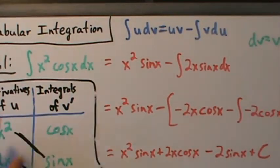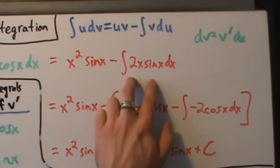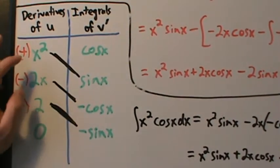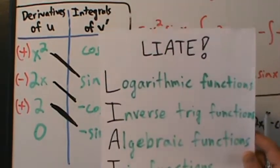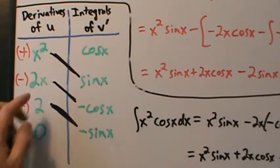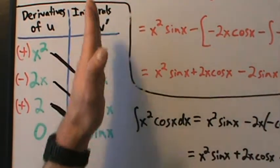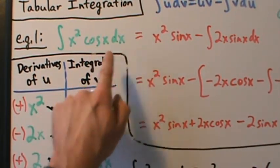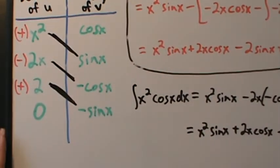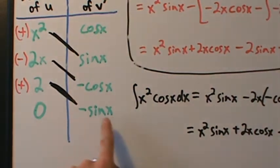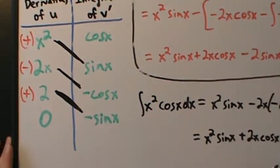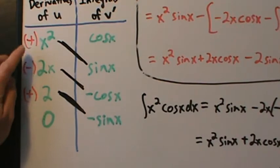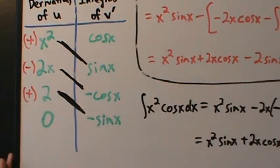To summarize tabular integration: pick u using LIATE, get v-prime as dv without the dx. Take derivatives of u until you get zero, set up your integrals of v-prime column, keep taking integrals until you get to that same row. Pair them up diagonally, and assign alternating signs — plus, minus, plus, minus — until you reach the end. Then slap it all together.